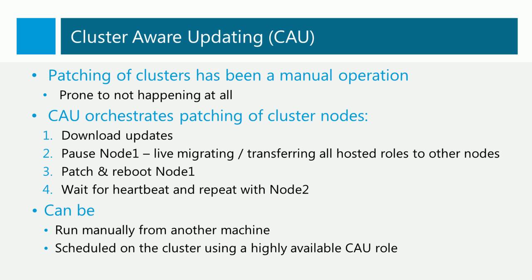CAU orchestrates the patching of cluster nodes by first downloading the updates, then it pauses the first node in the cluster. This causes the roles that are hosted on that cluster, such as virtual machines, to live migrate to other nodes in the cluster. That first node is patched, it's rebooted, and when it starts heartbeating again in the cluster, CAU counts that machine as being up and running, and then continues with the process on node 2.